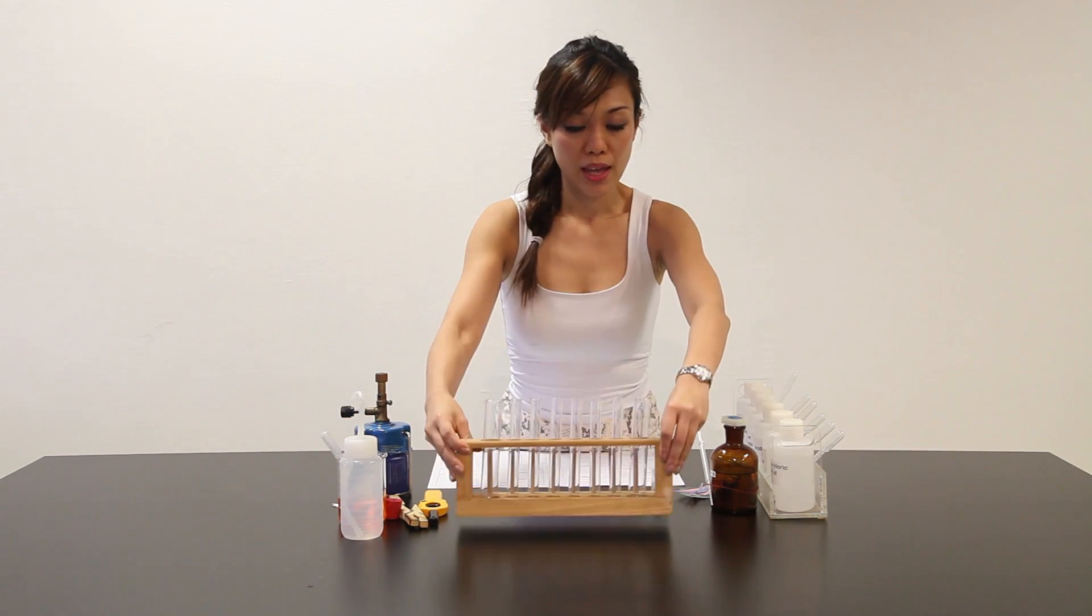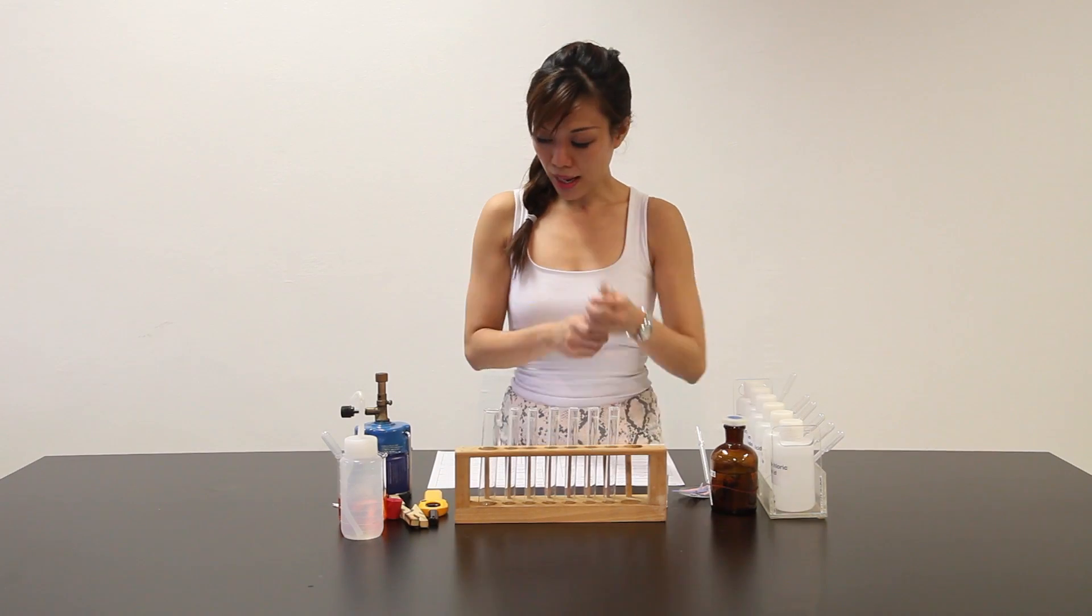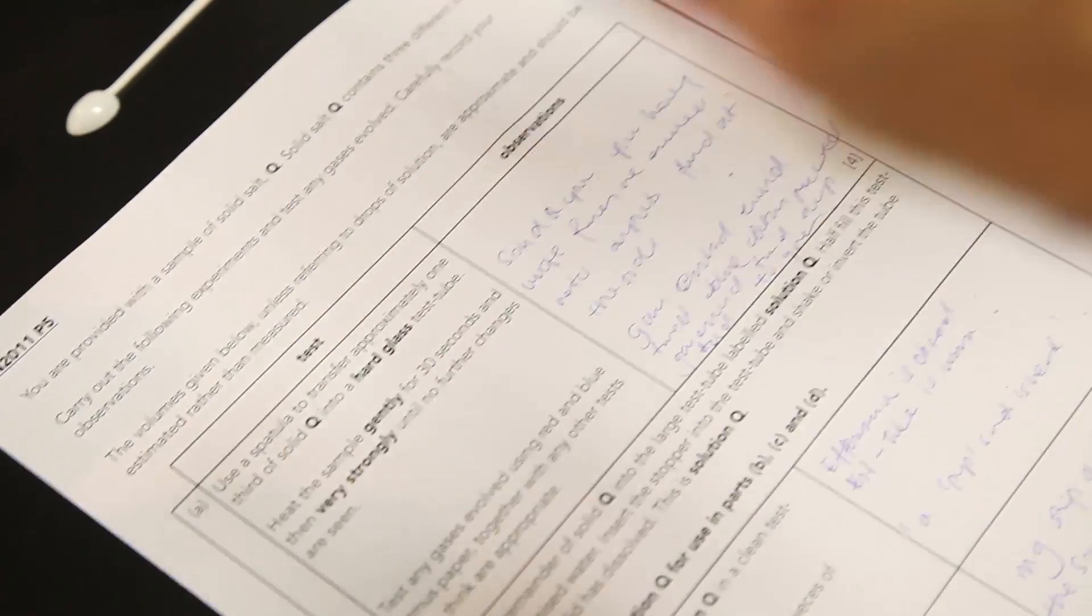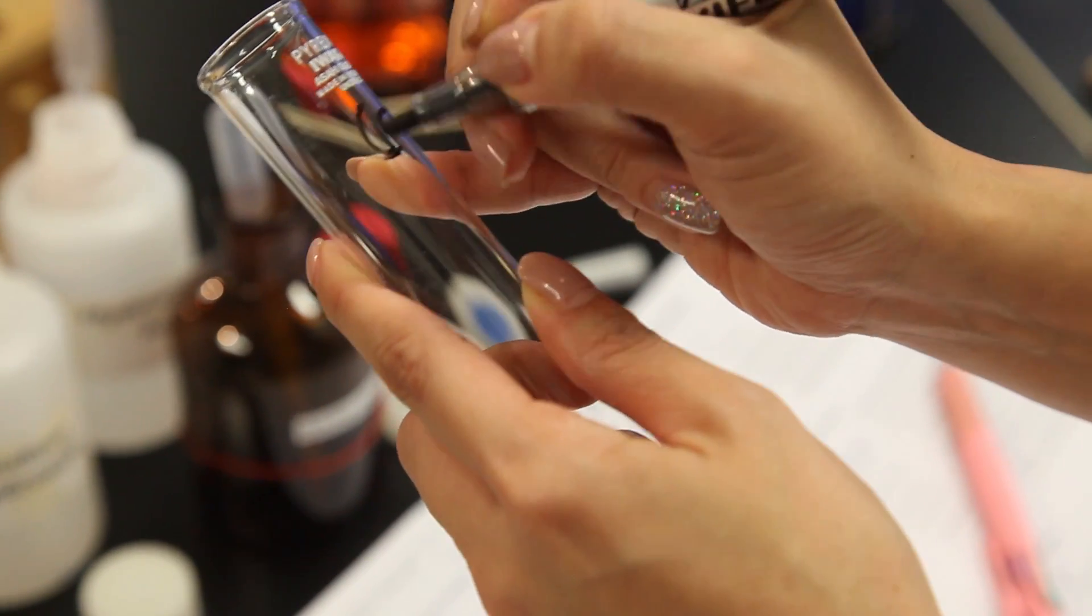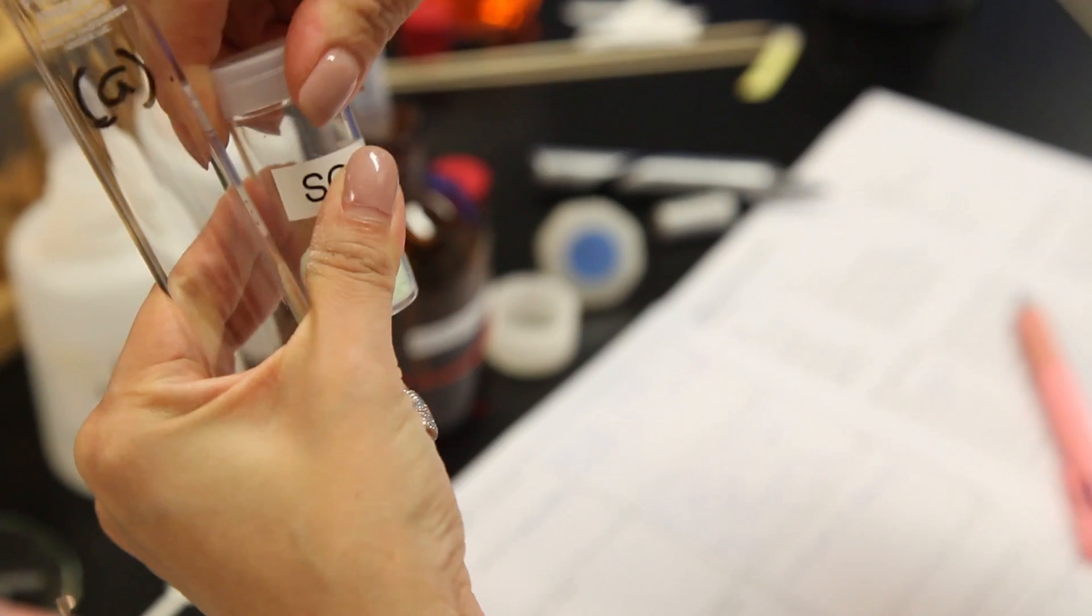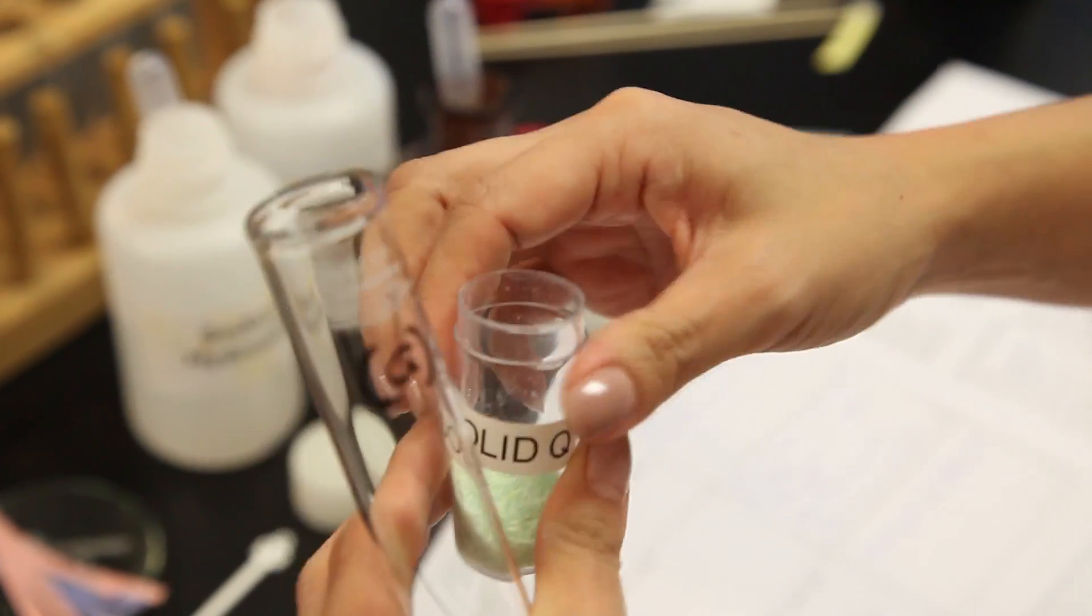So first of all, let me put the test tube in front and let's start doing the marking. Test tube. This is a hard glass test tube. Let me label it as A.